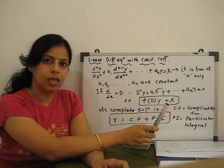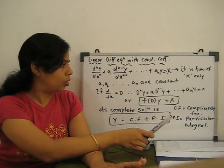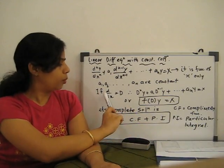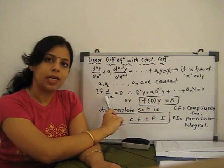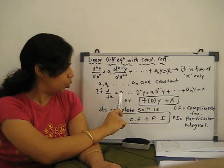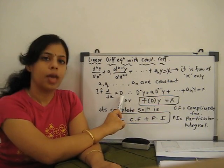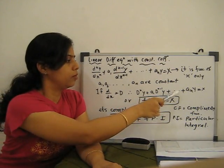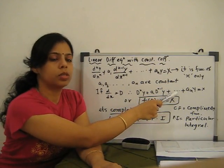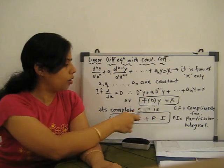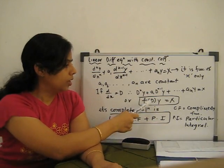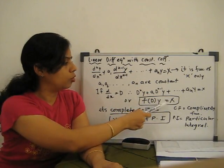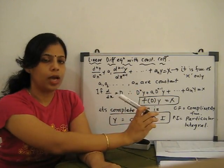The coefficients a1, a2, a3 are all constants. If we substitute D for d/dx, the equation becomes F(D)·y = X, where D is the differential operator.